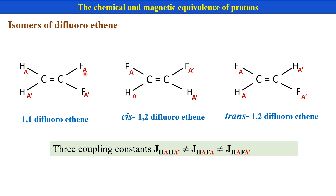Similarly, FA and FA' are chemically equivalent but magnetically non-equivalent. The reason is that the coupling of FA' with HA and the coupling of FA with HA is not the same. This is a trans coupling and this is a cis coupling — and since they are different, FA and FA' are magnetically non-equivalent, although they are chemically equivalent.